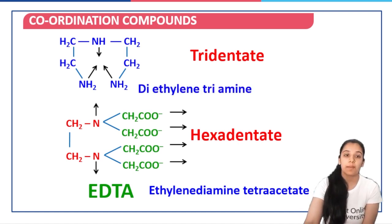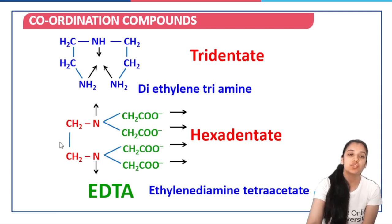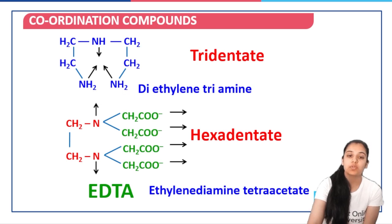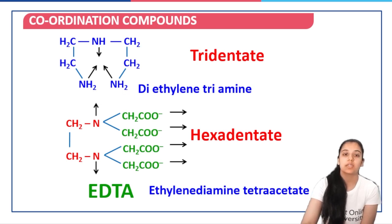The earlier example shown is diethylene triamine — this is one ethylene molecule, this is another ethylene molecule. Two ethylenes means diethylene, and there are three amino groups, so triamine — giving us diethylene triamine.